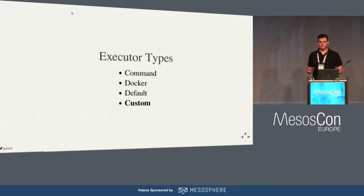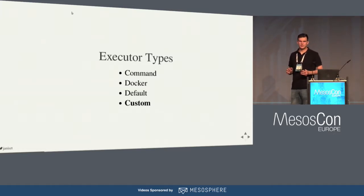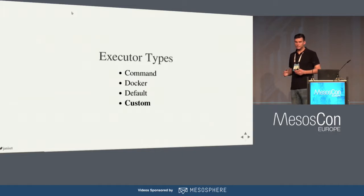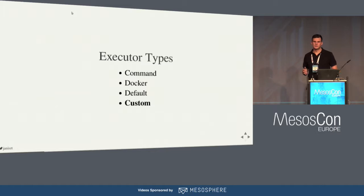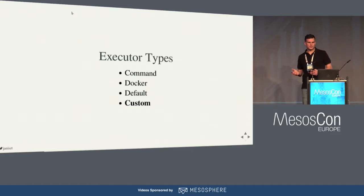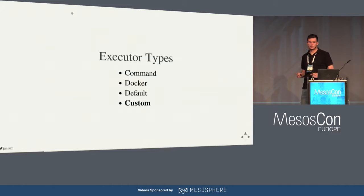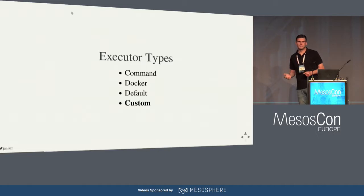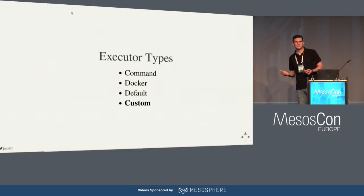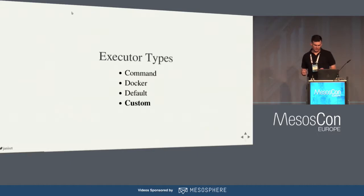There are four types of executor. First, the command executor — probably the most known and used — which uses the v0 API of Mesos, is bound to the libmesos native library, and can only run one task. There is also a Docker executor, very similar but running Docker. Then the default executor, introduced in Mesos 1.0, which uses the v1 HTTP API with no native binding and can run pods and multiple tasks. And what we're talking about today is the custom executor — you can write it however you like, and I strongly encourage using the HTTP v1 API.